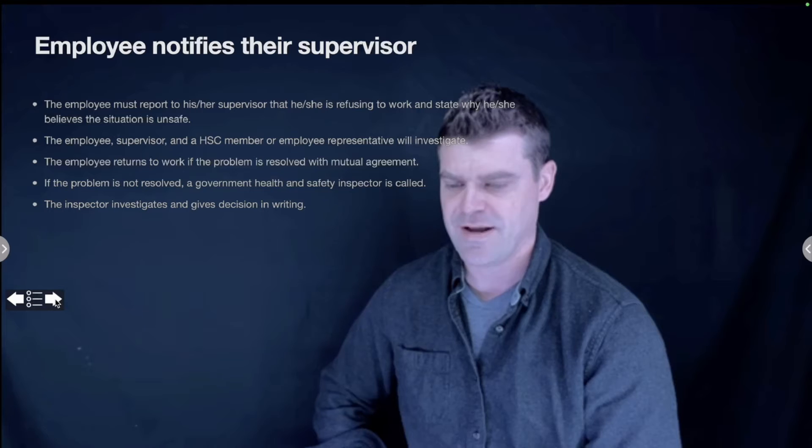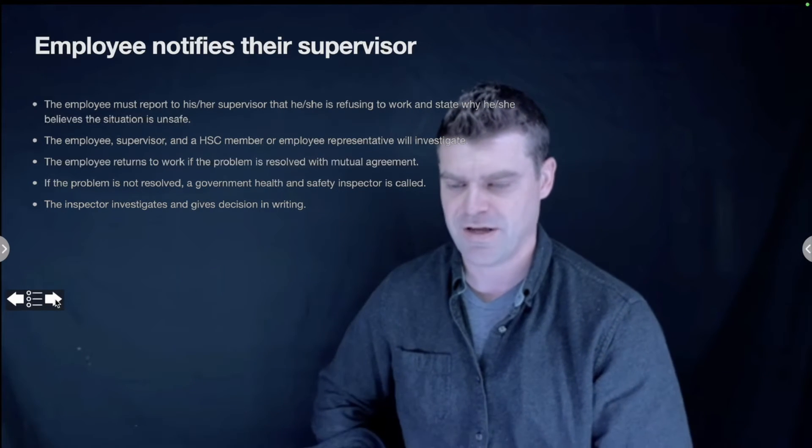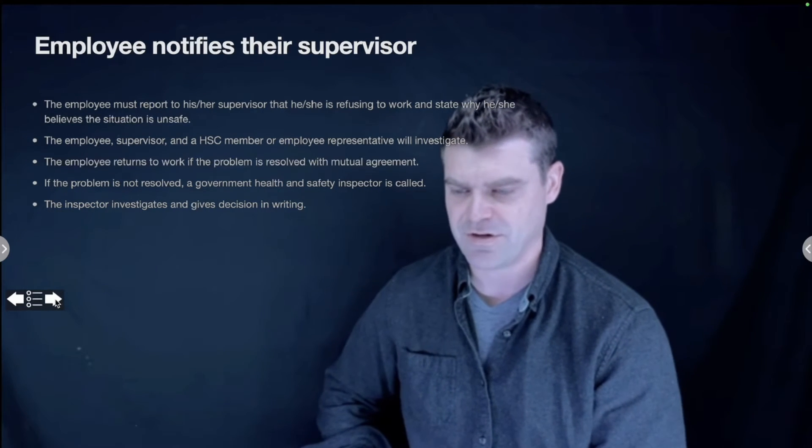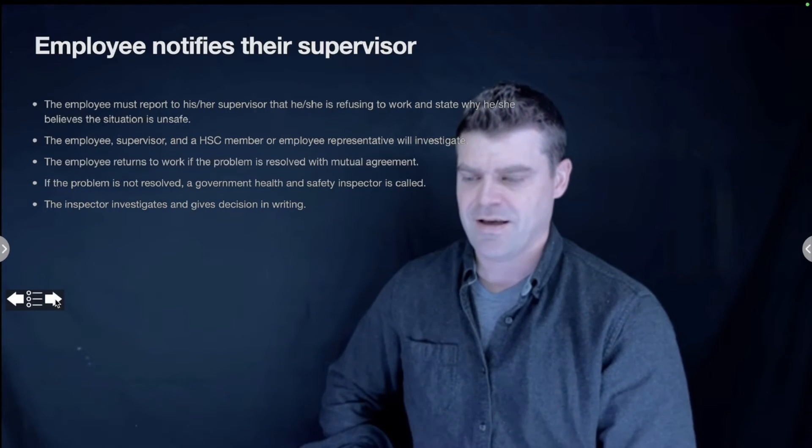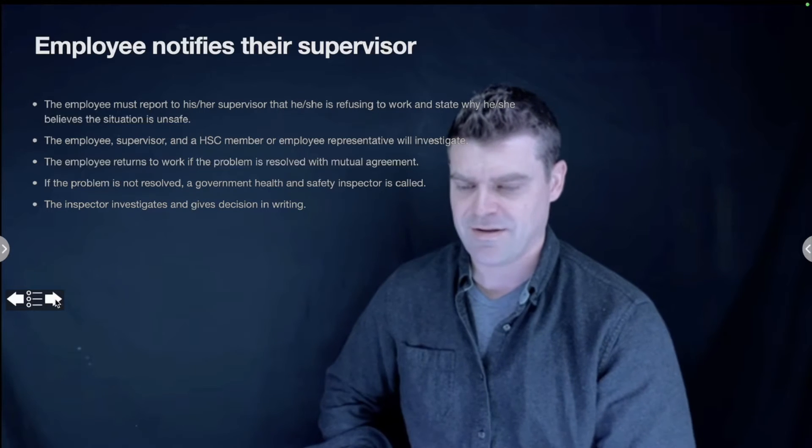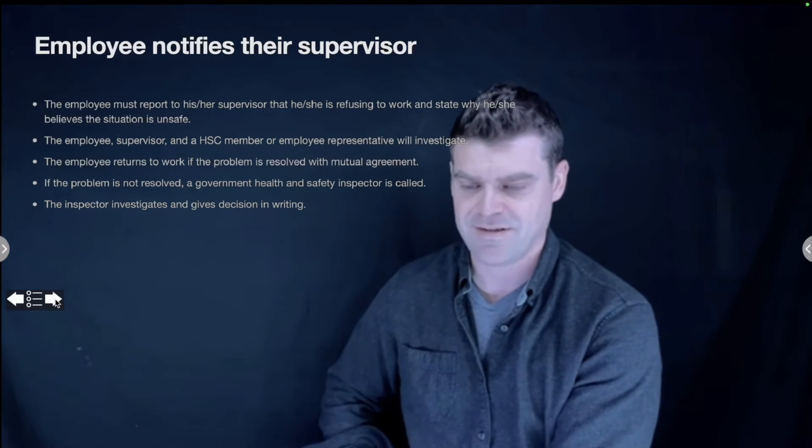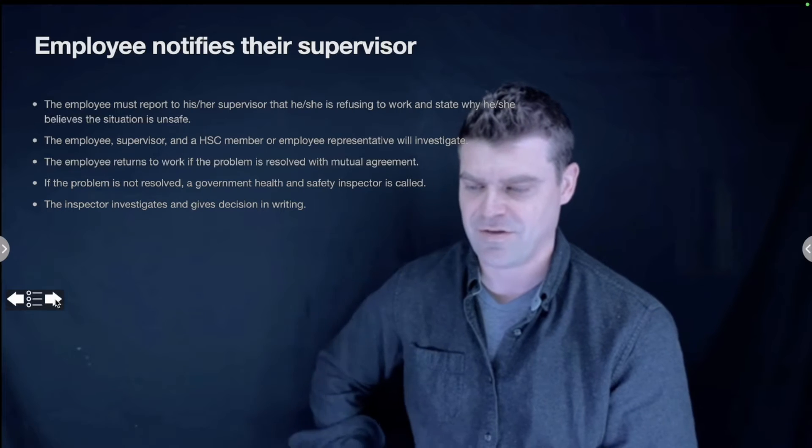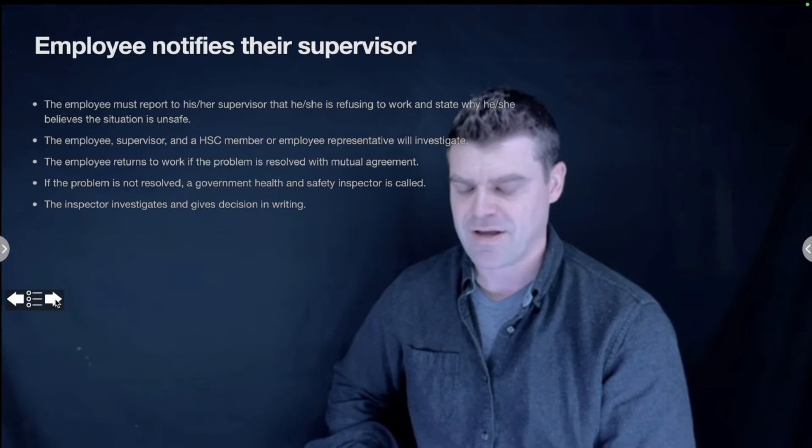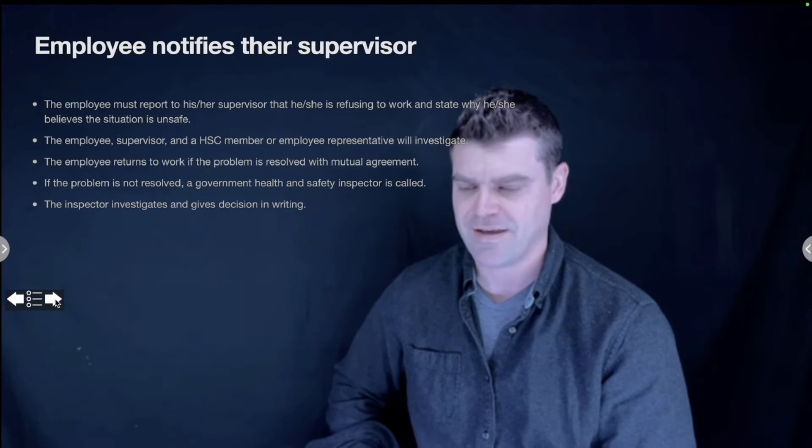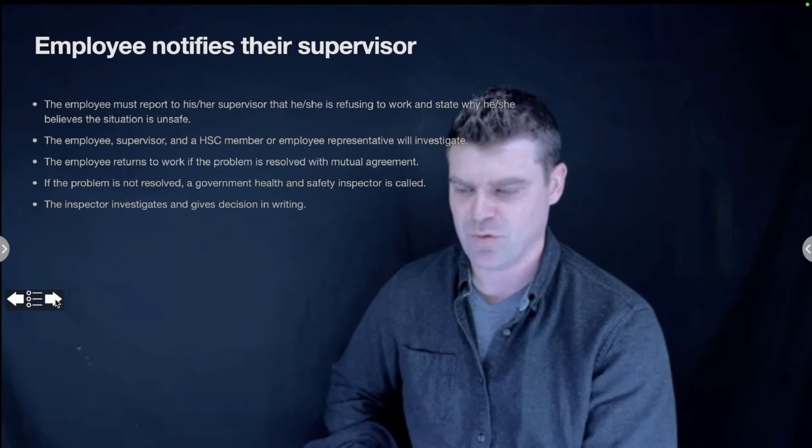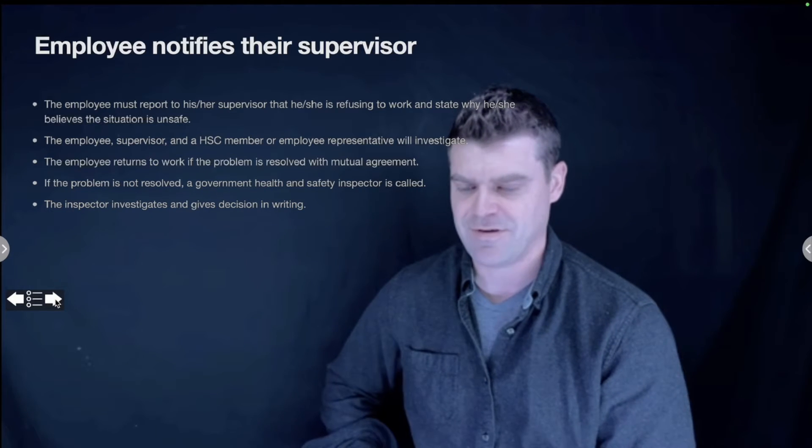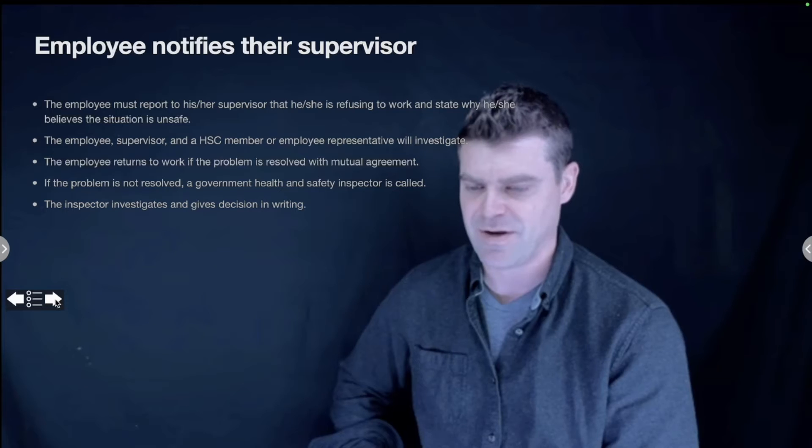The answer is the employee notifies their supervisor. There are steps and procedures that need to be followed when you approach an unsafe work situation. First, you have to go and talk to your supervisor and explain the situation. The supervisor will then talk with you and figure out what the situation is. You either have a discussion and deem that it is safe, or there is an unsafe situation. At that point, the employee, the supervisor, and somebody from your health and safety committee will go and investigate the situation. If they come up with a solution, the employee will return to work and it's all resolved.